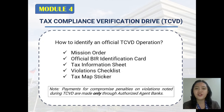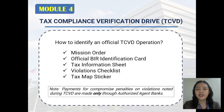How to identify an official TCBD operation: the revenue officer conducting the operation must have a mission order. They must be wearing their official BIR identification card. Third, they must provide a tax information sheet. And if there are violations upon inspection, the revenue officer must provide a violations checklist. And lastly, they must provide the taxpayer a tax map sticker.